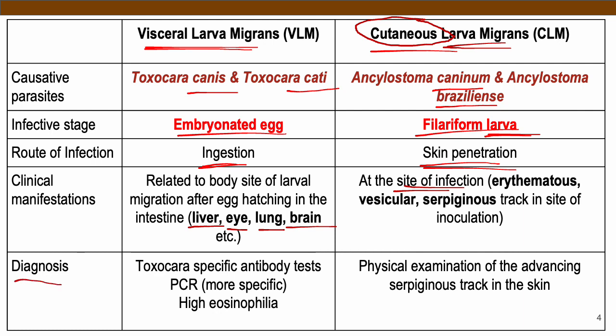For diagnosis, the most commonly used method for zoonotic diseases — specifically for visceral larva migrans — is antibody and serological testing. Toxocara-specific antibody tests can be used, PCR (polymerase chain reaction) is more specific, and in terms of signs and symptoms, a high eosinophil count is more common for visceral larva migrans.